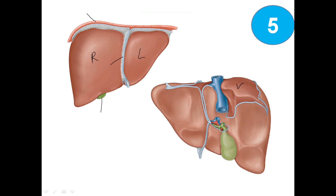We have the bare area and the inferior vena cava, the caudate lobe and the quadrate lobe. Here is the round ligament, also known as the ligamentum teres hepatis, and the ligamentum venosum. The gallbladder connects via the cystic duct, then the common bile duct. We also have the portal vein and the hepatic proper artery.